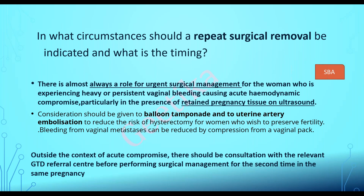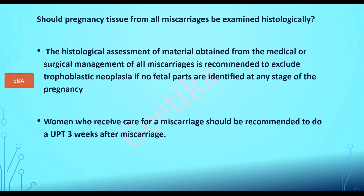Should pregnancy tissue from all miscarriages be examined histologically? Yes — histological assessment of material obtained from medical or surgical management of all miscarriages is recommended. Whenever a mother has a miscarriage, it is recommended that this tissue be sent for histological examination, unless fetal parts had been identified on ultrasound beforehand. If we know fetal parts were present on the scan, there is no need. Otherwise, all these tissues must be sent for histological examination to confirm it was not a molar pregnancy.